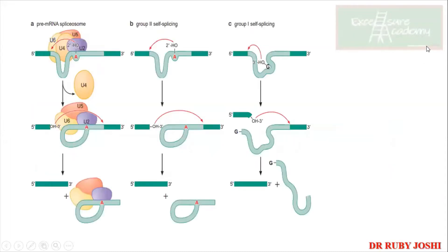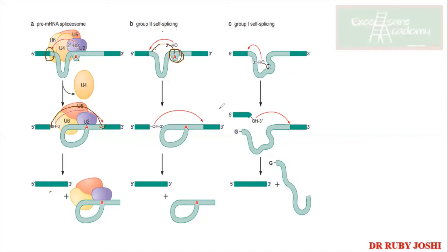Looking at the diagram: in spliceosome-mediated splicing, the branch site A carries out a nucleophilic attack forming a lariat, with complementary base pairing between U2 and the intron. In Group II self-splicing, no external machinery is needed — the RNA itself acts as an enzyme. Again, A at the branch site carries out the 2'-OH nucleophilic attack, also forming a lariat.